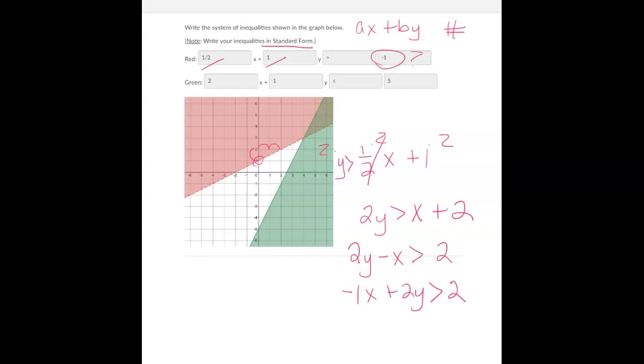But what you also usually notice is that usually you have this first coefficient be positive. So if you multiply everything by negative 1, we would end up with 1x minus 2y. That does switch the symbol and negative 2. So I would probably go with this. I think the answers are coded, so you could have either of those since it doesn't say.